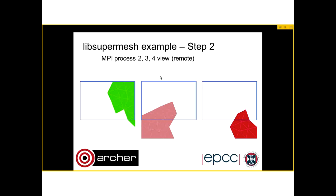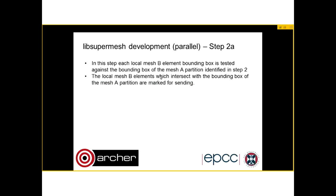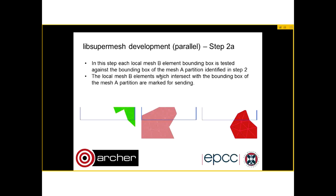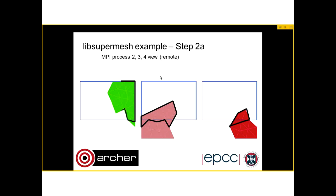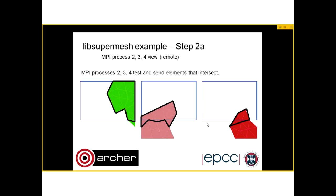So in step 2a, these processes do a local test and only send the elements that actually intersect. MPI process 2 (the green one) finds that most of its elements intersect with the bounding box, so it will send almost all of them. Whereas MPI process 3 only has the top part of its elements intersecting, and MPI process 4 (the red one) has about one third of its elements that could intersect. Of course this doesn't guarantee there will be an intersection, but we have to send these elements because they could intersect.